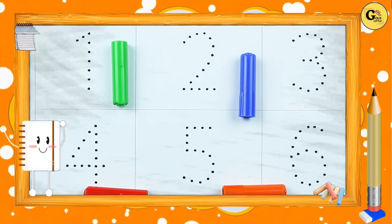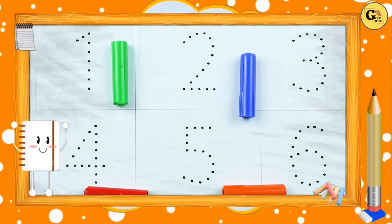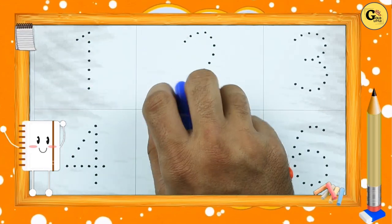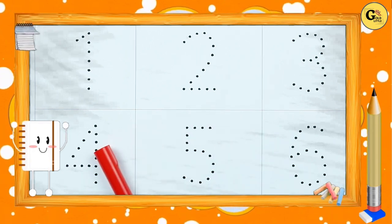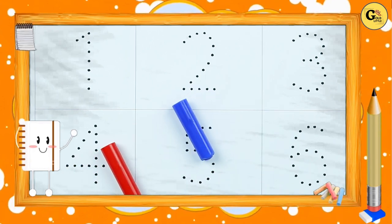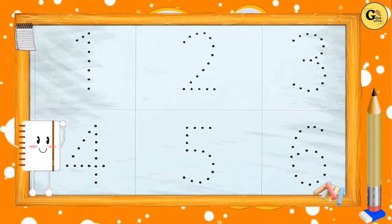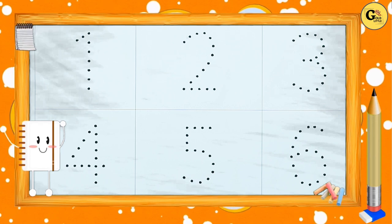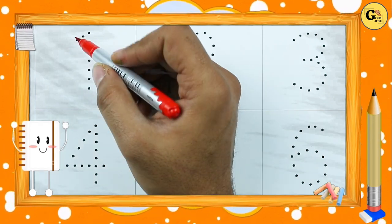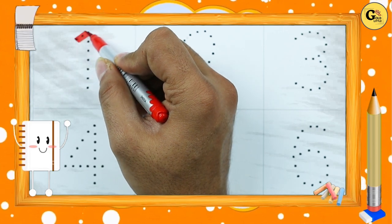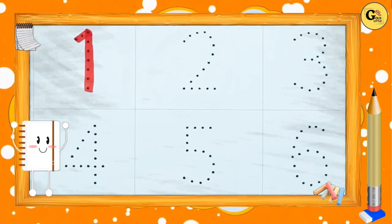Hello friends! Today we learn numbers 1 to 10 with some colors: red color, blue color, green color, orange color. Let's start how to write numbers 1 to 10. It's number 1 — yes, number 1 with red color.